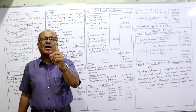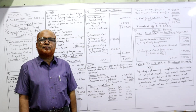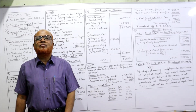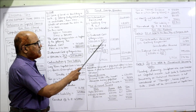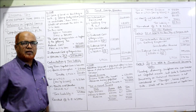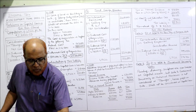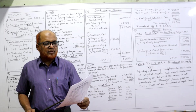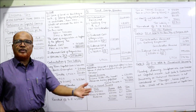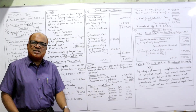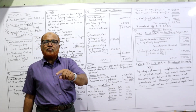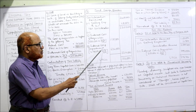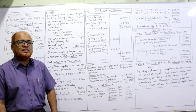Actual cost Rs. 5 lakh multiplied by current previous year index 317, divided by index number of the year of purchase. Any asset purchased before 1st April 2001 takes index number 100. So 5 lakh into 317 by 100 gives Rs. 15,85,000. For improvement: during 2003-2004, she constructed 2 rooms at a cost of Rs. 2,18,000. Indexed cost of improvement: Rs. 2,18,000 into 317 divided by index of 2003-2004, which is 109 — this gives Rs. 6,34,000.